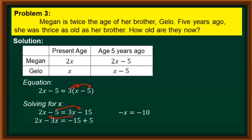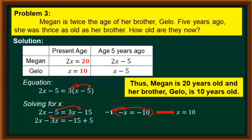Going back to our table, Jello's age is equal to x, so Jello is 10 years old. For Megan's age, we double Jello's age: 2 times 10 equals 20. Thus, Megan is 20 years old and her brother Jello is 10 years old.